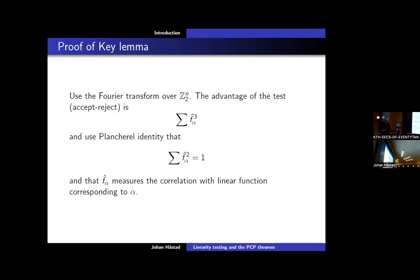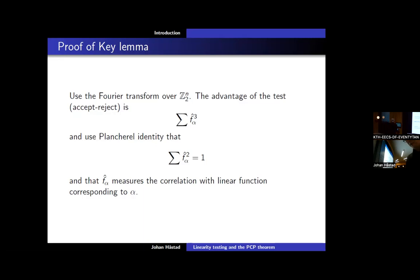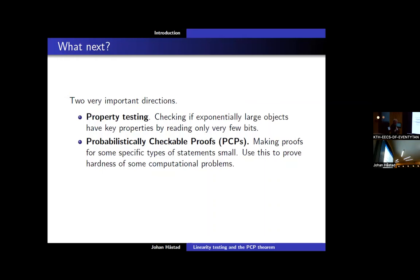Since it's a curtain talk I can't really prove things, but let me tell you what the proof is like. If you set things up properly it's a very easy proof. You take the Fourier transform over Z_2, and it turns out the advantage of this test — the probability that it accepts minus the probability that it rejects — is in fact the sum of the cubes of the Fourier coefficients, which is just a trivial computation once you set it up. You use the fact that the sum of the squares is one and that the Fourier coefficients are the correlations with the linear functions.